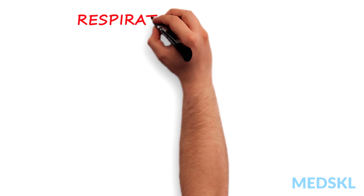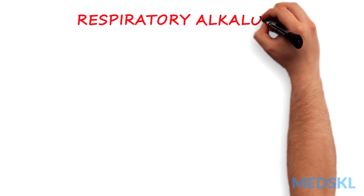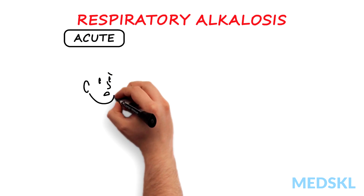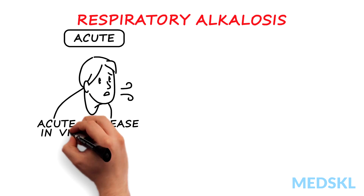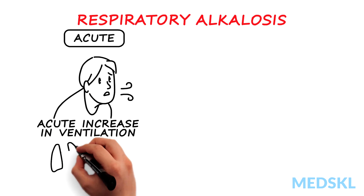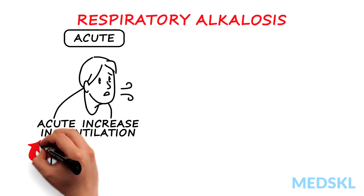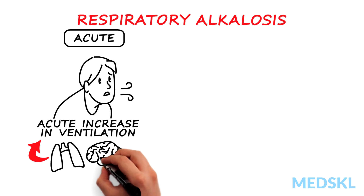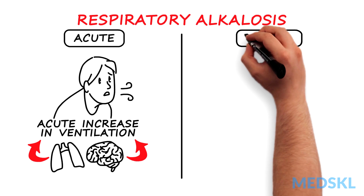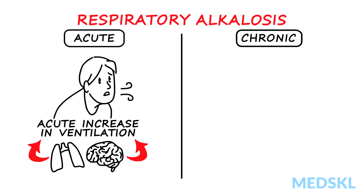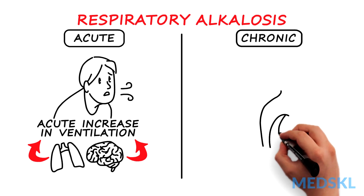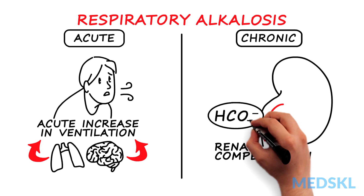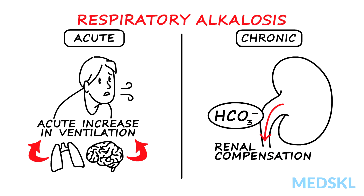Acute respiratory alkalosis results from an acute increase in ventilation secondary to disorders of the lung or due to direct stimulation of the respiratory center. Chronic respiratory alkalosis allows for renal compensation and decreased bicarb levels.